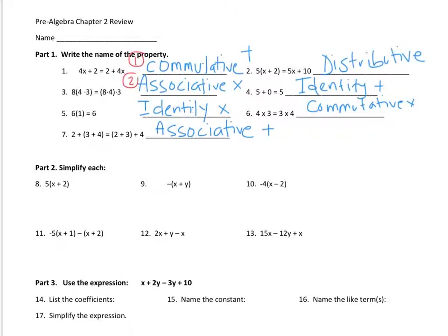The associative property: the order from left to right stays the same, but you're changing where the parentheses are — you're changing the grouping. The identity property is where you're either multiplying by one or adding zero. That's the third one — identity.